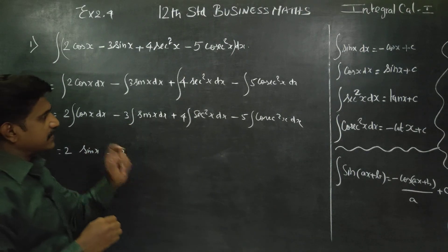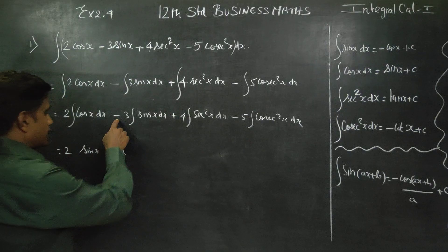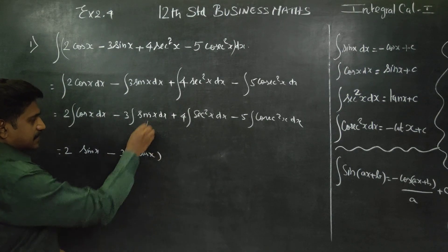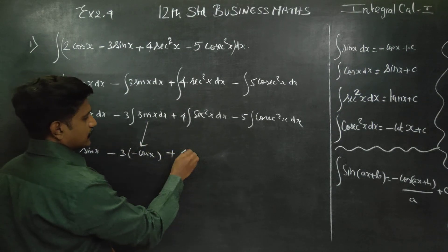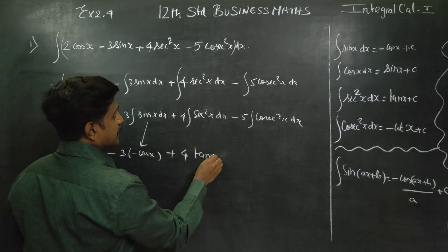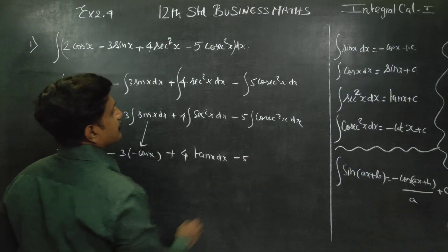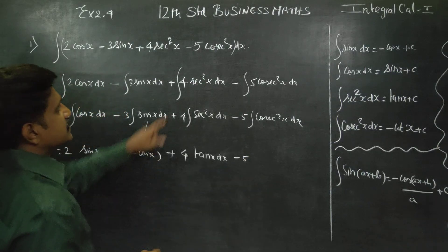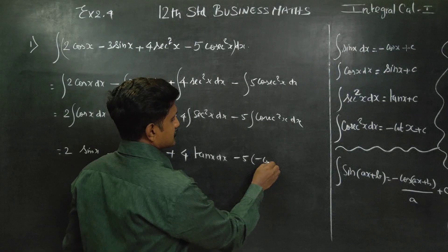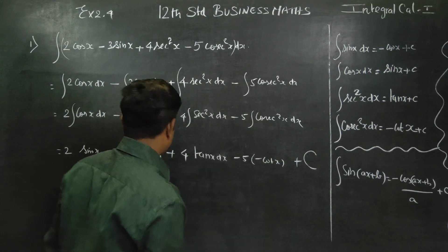Minus 3 — sin is equal to sin x, minus cos. It is equal to sin x minus cos x. This is sin x formula. 4 — secant square is tan x, tan x dx. Minus 5 is equal to cos x. Cos square x is equal to minus x. Minus cos x. All that is equal to sin x.